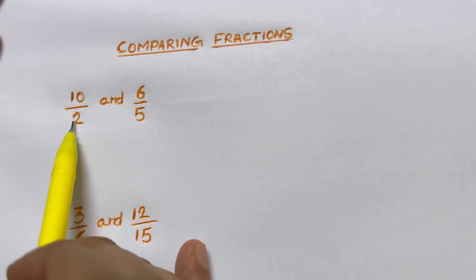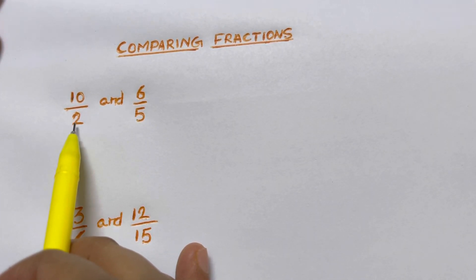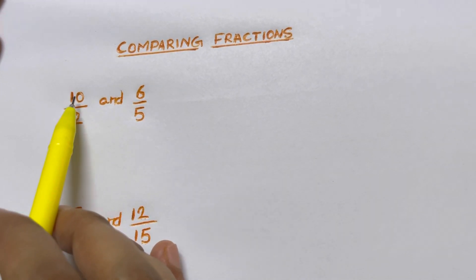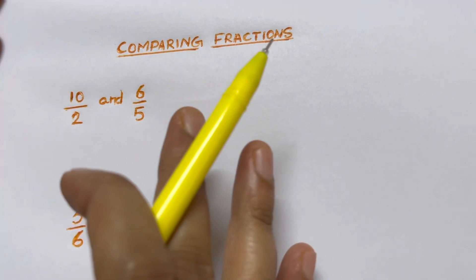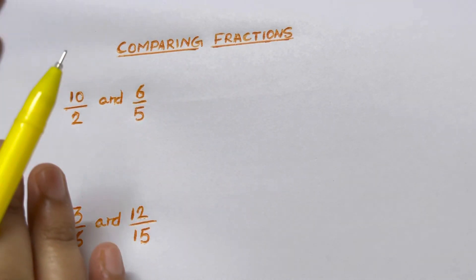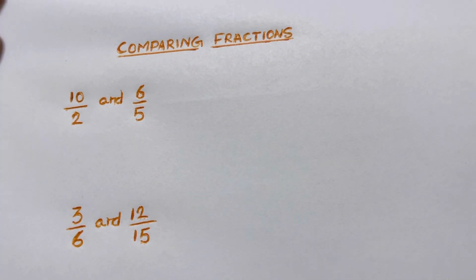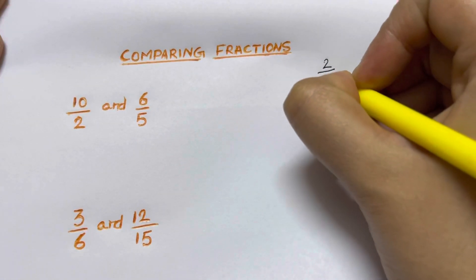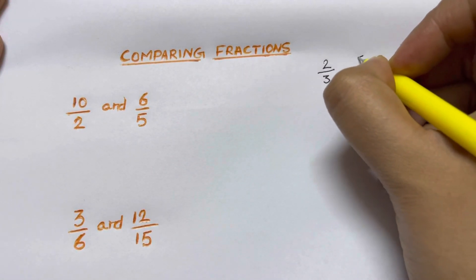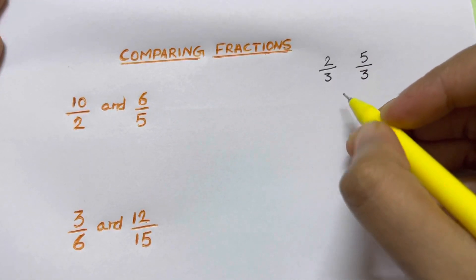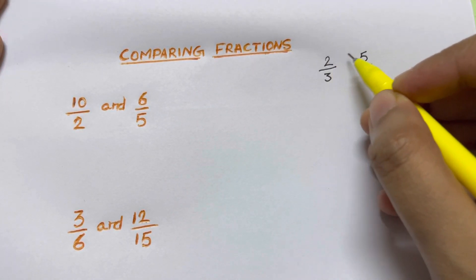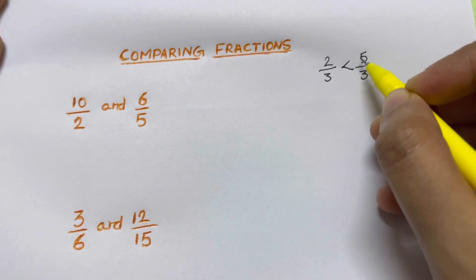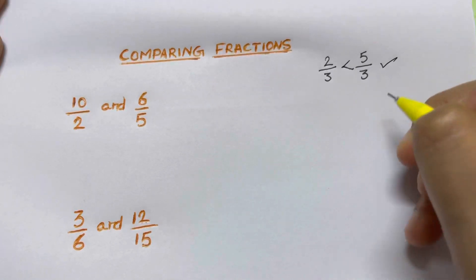If there are unlike denominators, you can see the denominators are different. If the denominators are the same, we just compare the numerators to find out which one is greater. For example, if you have the fraction 2 over 3 and 5 over 3 — they have the same denominators, so you just compare the numerators and tell that 5 over 3 is greater than 2 over 3. This is how we do it.